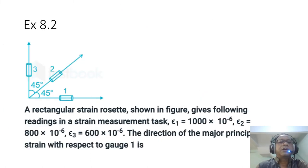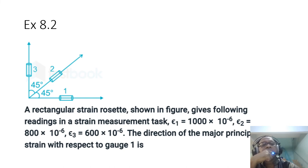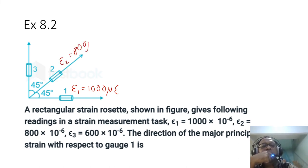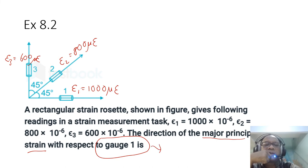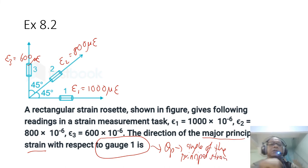Now for exercise 2: a rectangular strain rosette gives the following readings — epsilon 1 = 1,000 microstrain, epsilon 2 = 800 microstrain, and epsilon 3 = 600 microstrain. The question asks us to find the direction of the major principal strain with respect to gauge 1. We want to determine the principal angle.